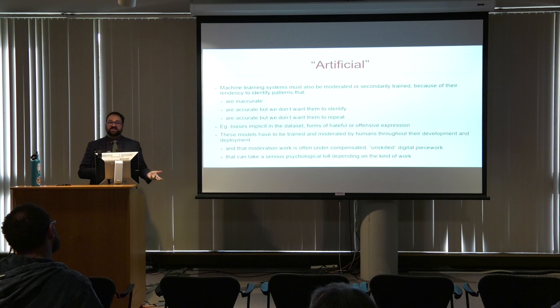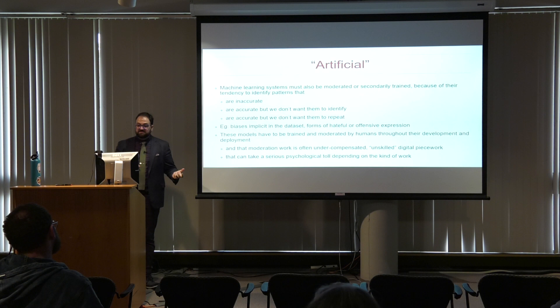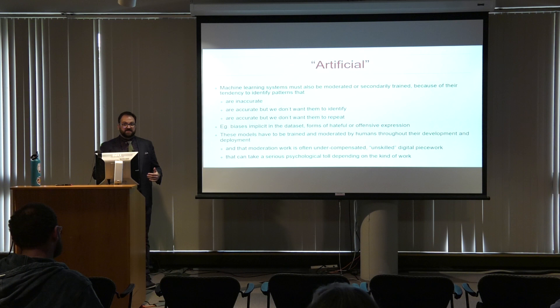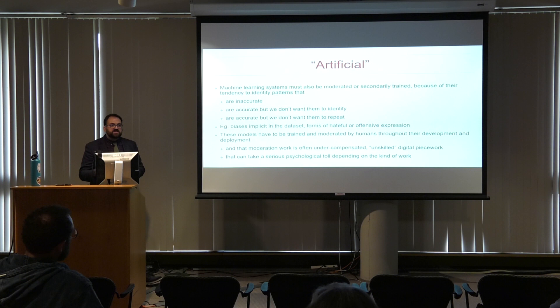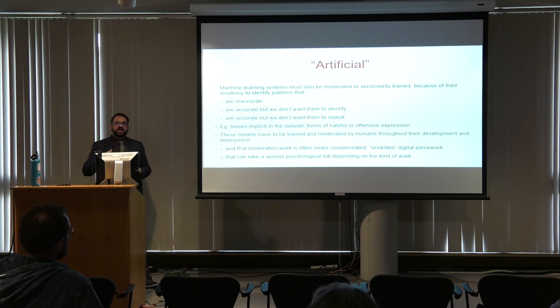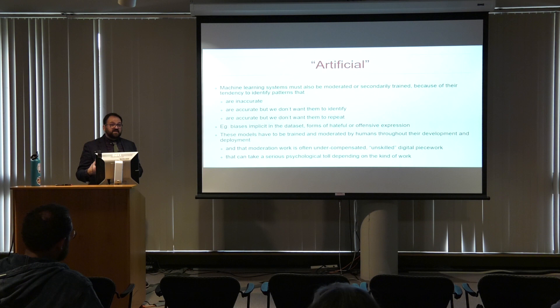What I'm going to argue is that artificial intelligence in this moment is best understood as a kind of story — and it's the same kind of story as the story the Romans tell about authorship. Let's think about the word 'intelligence.' These tools don't really do intelligence. This is an example of using the language of the human mind to claim computers can simulate human mental capacities. Machine learning systems really identify patterns in large amounts of data.